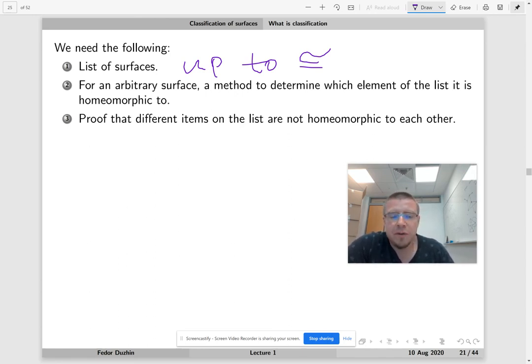Then for an arbitrary surface, we need some kind of algorithm to determine which element on the list this unknown surface S is homeomorphic to. And we need to prove that different items on the list are not homeomorphic to each other, right? So today, we will be able to do 1 and 2. So number 3 is going to be in lecture 4.